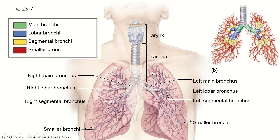All right, so we're going to start talking about the bronchi and the alveolar sacs, but let's start first with a little bit of review. So we've got the larynx here, the epiglottis, hyoid bone, trachea, thyroid cartilage, cricoid cartilage, rings of tracheal cartilage, and then the right and left main bronchus.